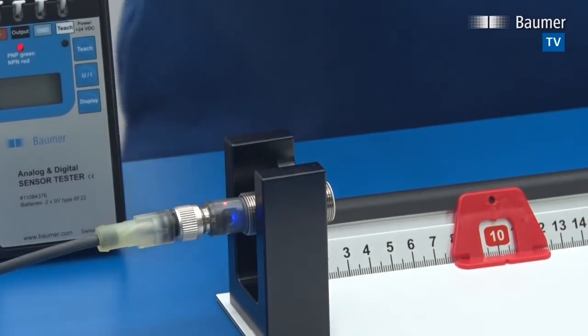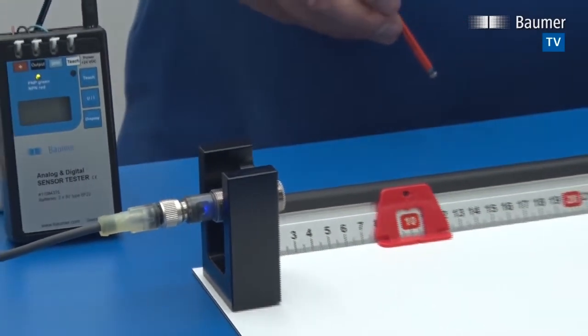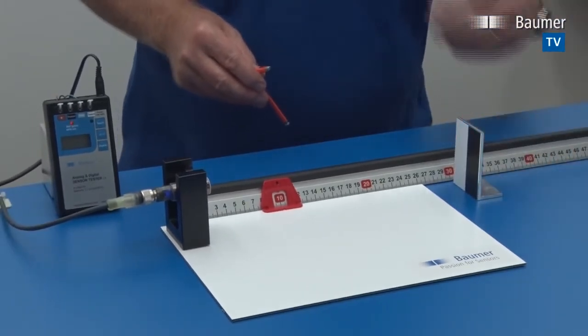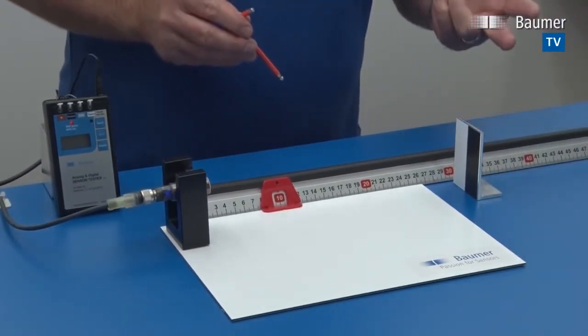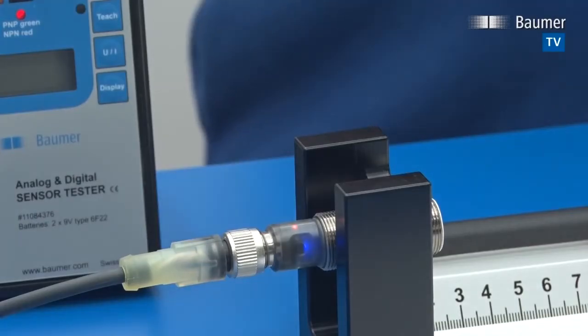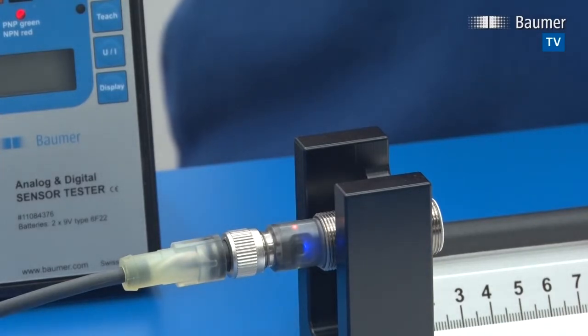And now the sensor still detects the object at 30 centimeters because we have not moved the target, but by teaching twice the sensor's output configuration has been changed from normally open to normally closed.